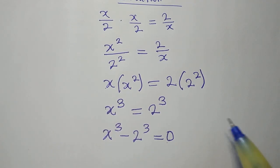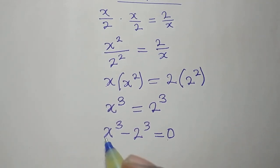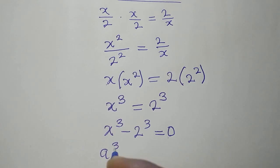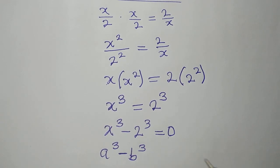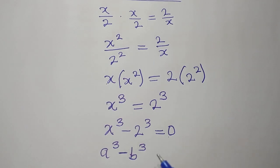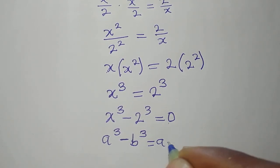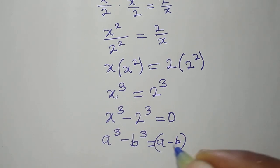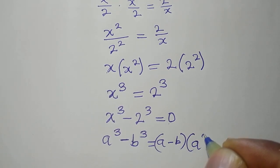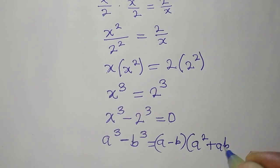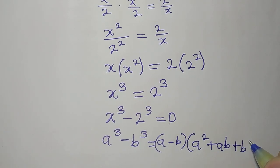So we can now apply what we call the difference of two cubes. It says if you have a cubed minus b cubed, this is equal to a minus b, into a squared plus ab plus b squared.